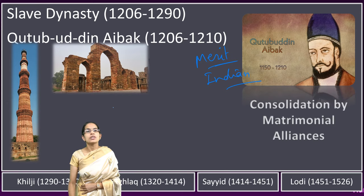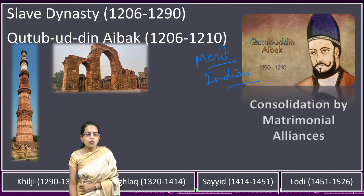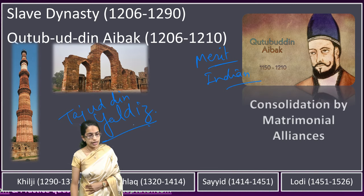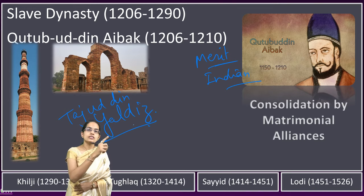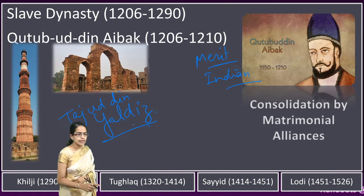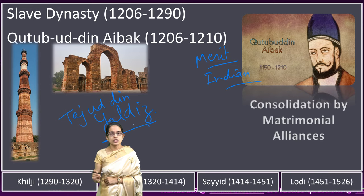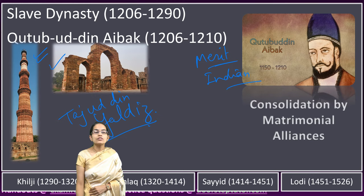When he was appointed governor, he started with the foundations of the Slave dynasty and followed a policy of consolidation through matrimonial alliances. He married the daughter of Tajuddin Yaldiz, who was the governor of Ghazni, and thereby consolidated his empire. He was a strong believer of art and architecture. As a result, Qutb Minar was built during his time, and also the Quwwat-ul-Islam mosque was built during his time.